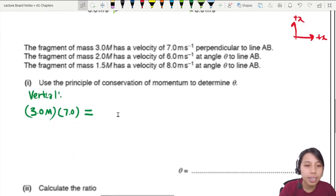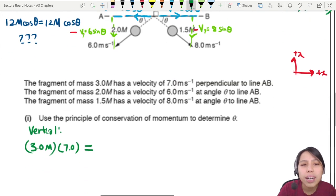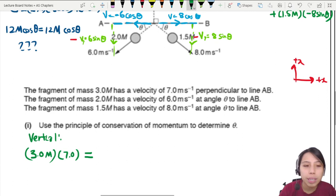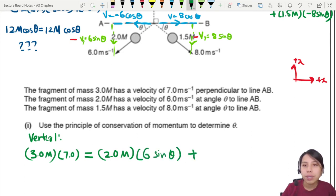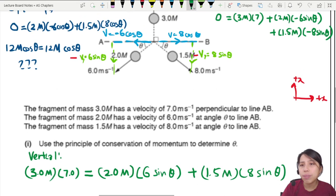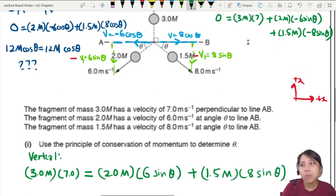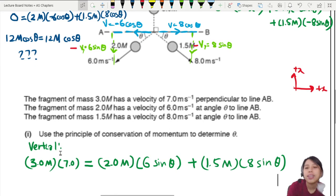So we can write here that this will be equal to, what's the mess here? I need more space. Let's keep it like this. Don't move my screen too much. 2.0 M times six sine theta plus this one is 1.5 M times eight sine theta. If you're wondering, me swapping to the negative side. Here's the negative sign, right? I move it to the other side. So the zero is, you know, not zero anymore and move it to the other side. So I want to get rid of the negative signs.